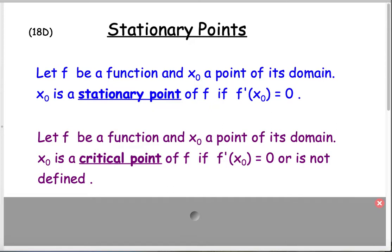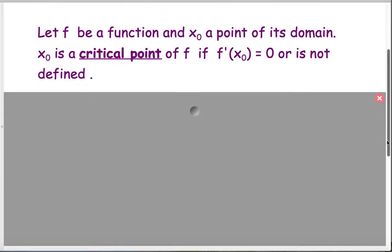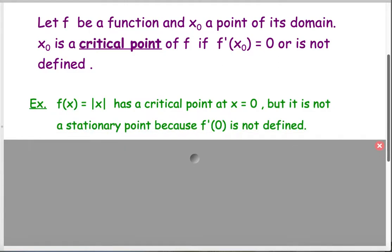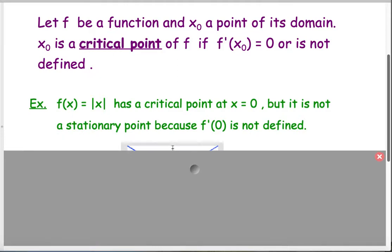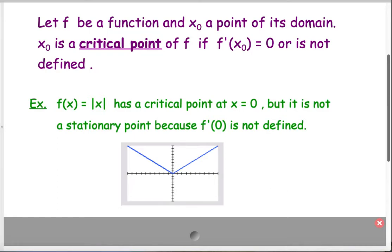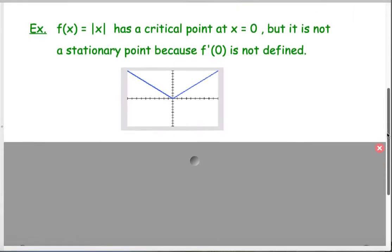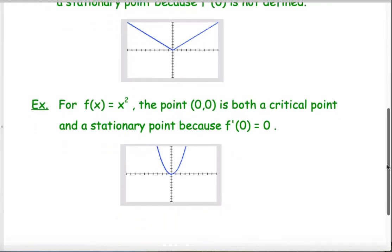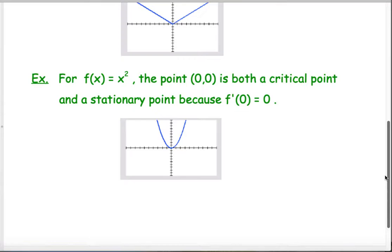IB doesn't actually talk a lot about critical points, but a critical point is where the derivative is zero or it's not defined. A stationary point is a critical point, but every critical point is not necessarily a stationary point. For example, the absolute value of x graph has a critical point at zero but it's not a stationary point because f prime of zero is not defined. On the other hand, y equals x squared has a critical point at the vertex (0,0) that is also a stationary point because the derivative equals zero there. So critical points encompass more than just stationary points.